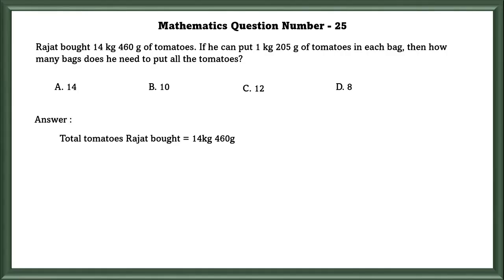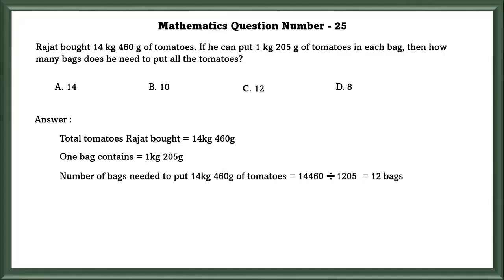Total tomatoes Rajat bought is equal to 14 kg 460 grams. One bag contains 1 kg 205 grams. Number of bags needed is equal to total weight of tomatoes divided by how much one bag can contain. If we do that, we will get 12 bags.